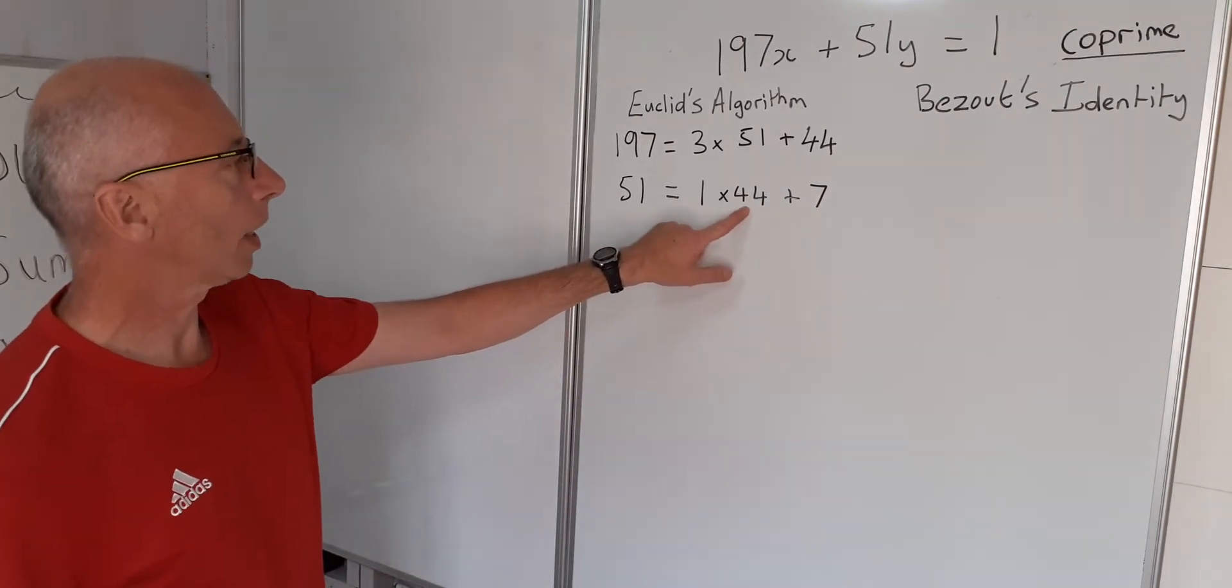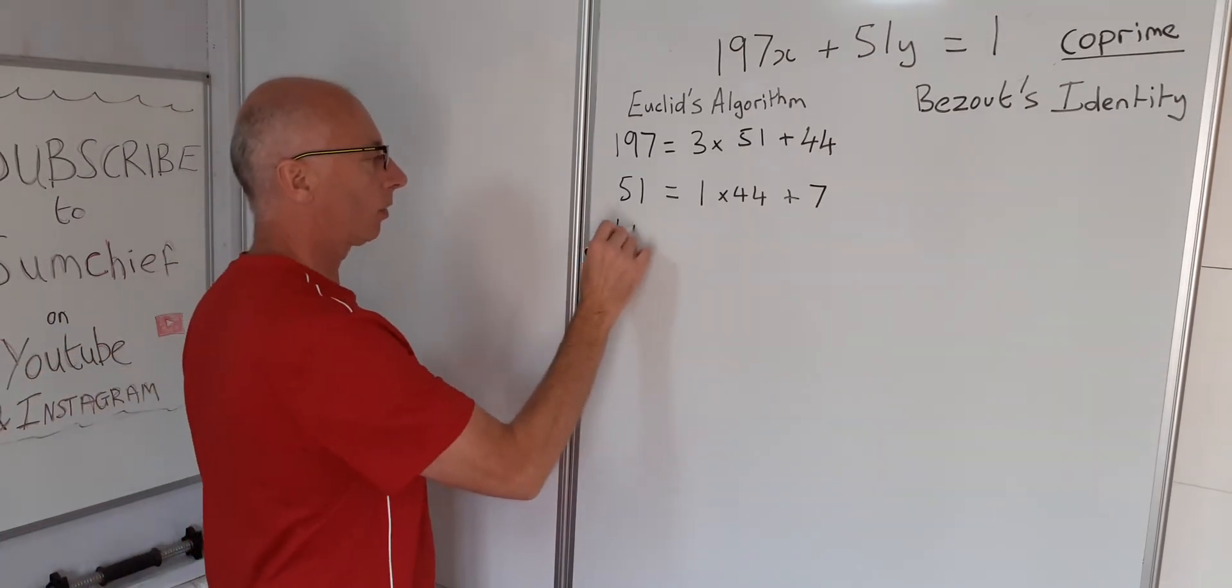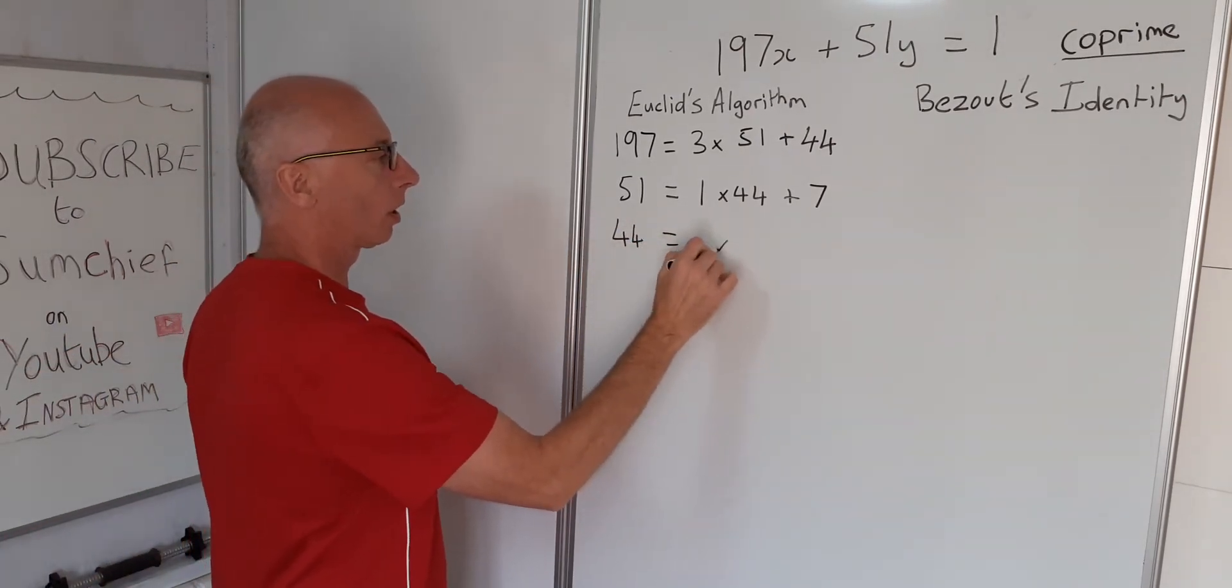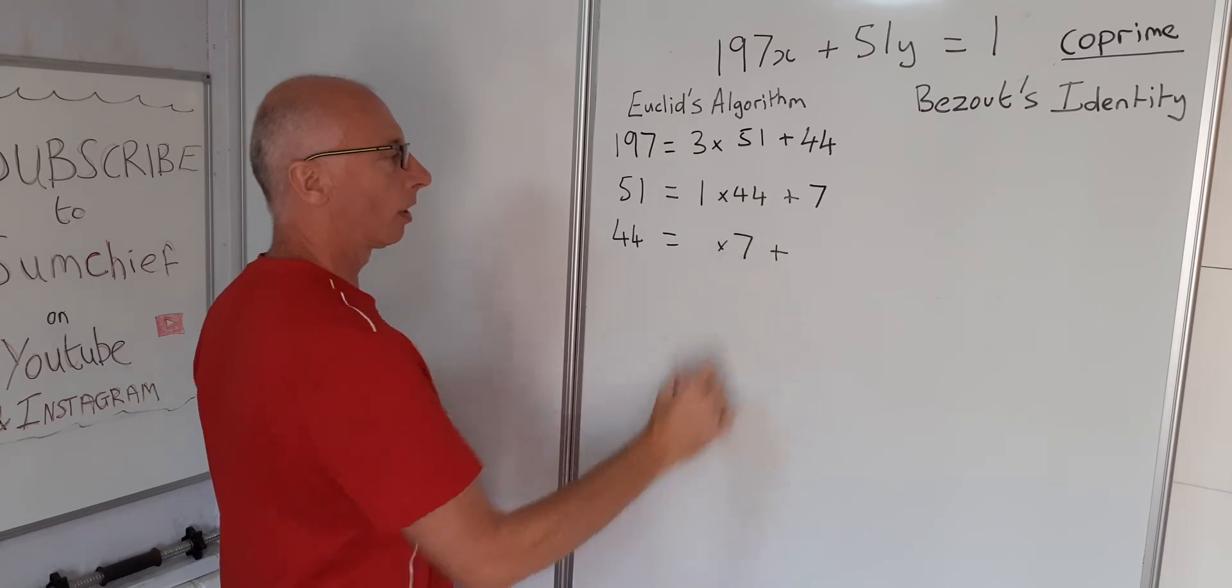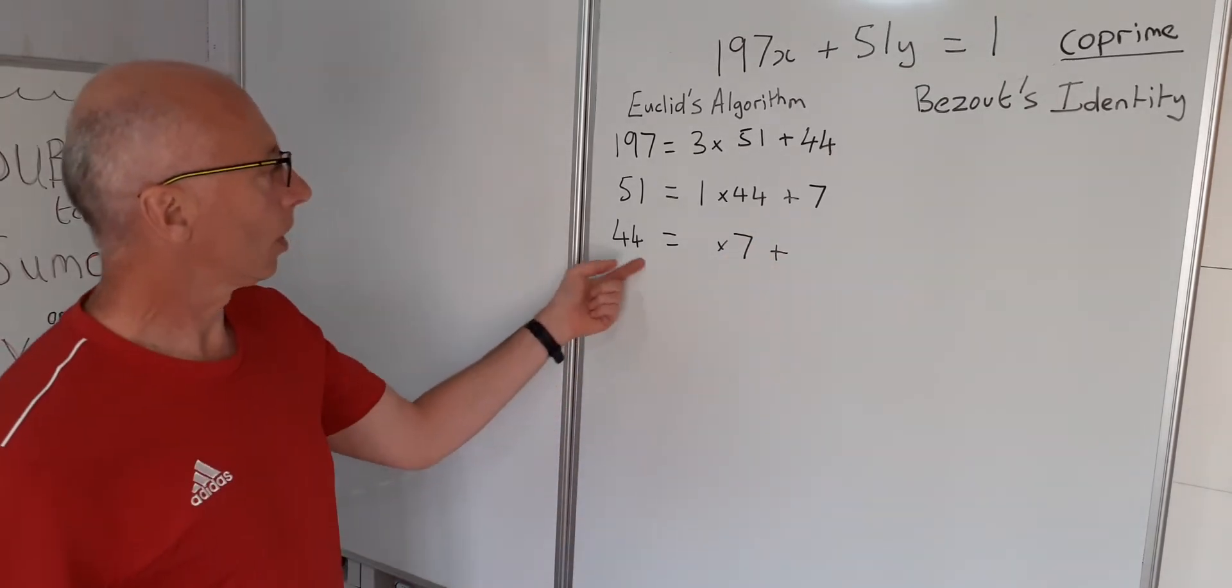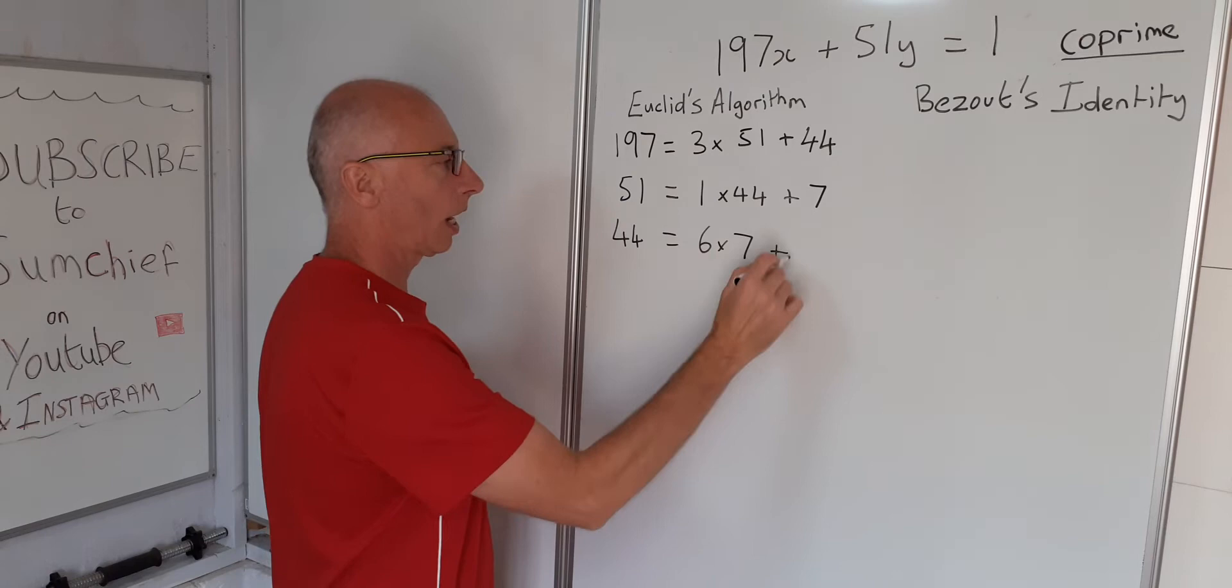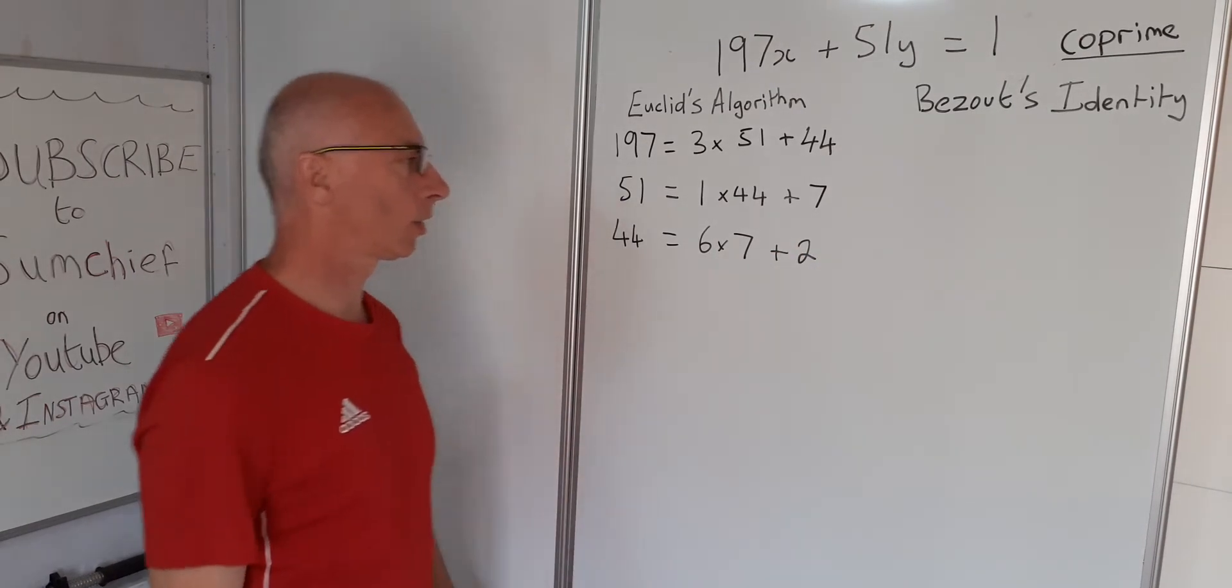So moving on again, take the biggest number. 44 equals something times 7 with a remainder. So 6 times 7 is 42, and then we're just going to add 2 to make up to the 44.